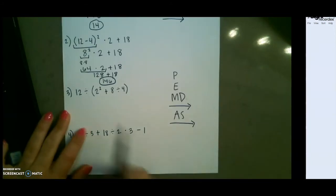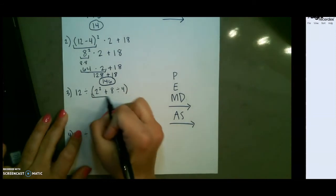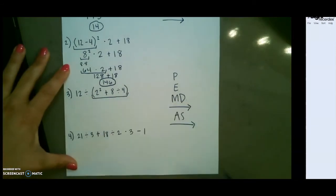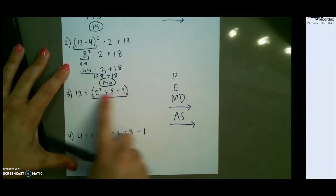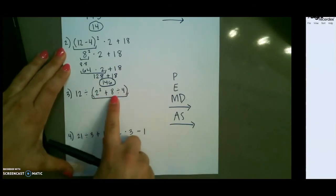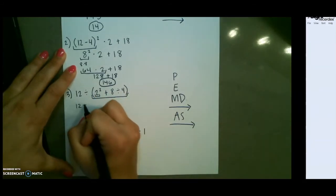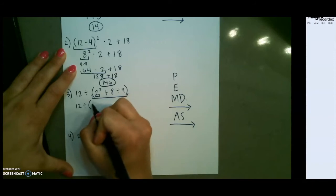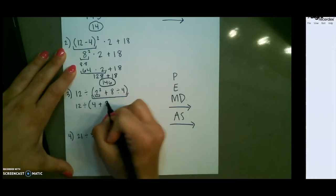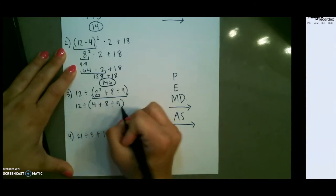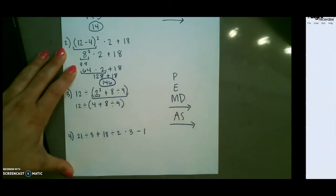For our next example, we start with the parentheses. You'll notice we have several operations in our parentheses. We want to follow the order of operations inside our parentheses until we complete every operation here. We're going to start with the exponent. So 2 to the second power would be 4. Notice that I'm still putting the parentheses around it because we have not completed everything.